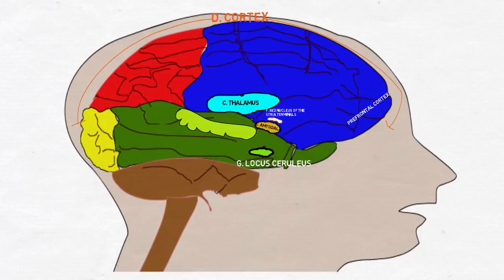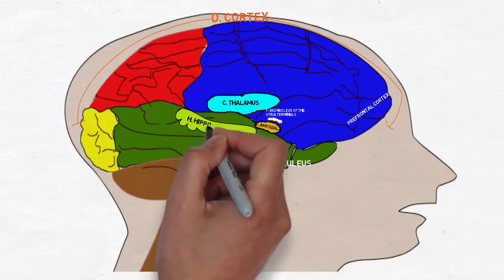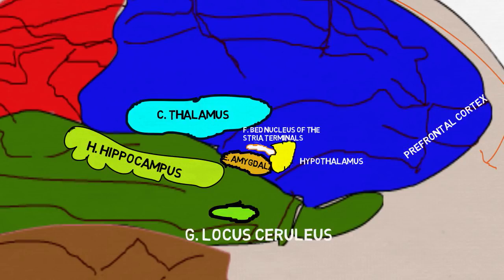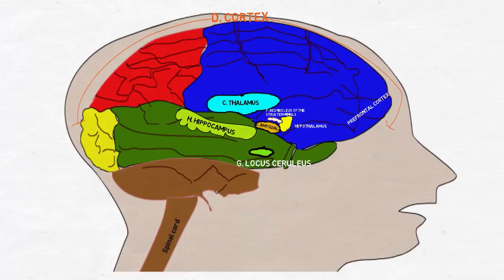The hippocampus is your memory center, storing raw information from the senses along with emotional baggage attached to the data by the amygdala.